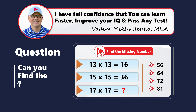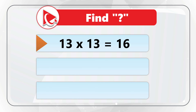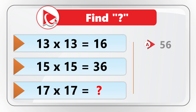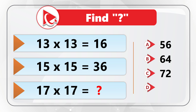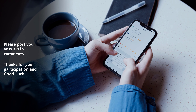Surprise! I have a problem for you to solve. You need to find the missing number, and you're presented with three expressions. First expression: 13 by 13 equals 16. Second expression: 15 by 15 equals 36. Last expression: 17 by 17 equals the missing number represented by the question mark. You need to select from four choices — Choice A: 56, Choice B: 64, Choice C: 72, and Choice D: 81. Maybe pause this video for 10 to 15 seconds to find the solution, then post your answer in comments.